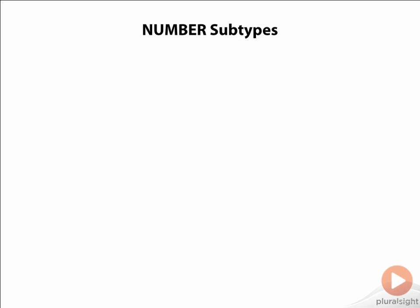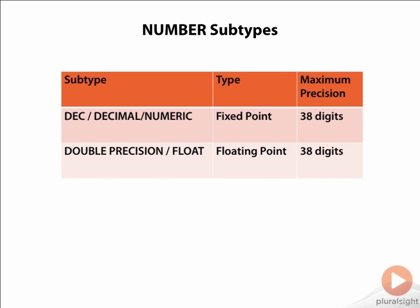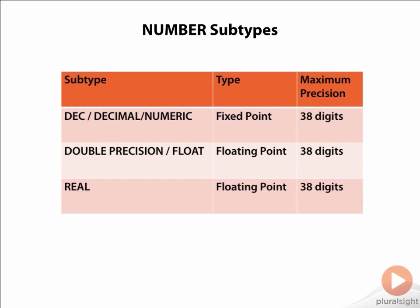Let us quickly look at the number subtypes. First, we have the decimal or numeric type, which are fixed point numbers with a max precision of 38 digits. Then we have double precision or float type, which are floating point numbers with a maximum precision of 38 digits. Real is also a floating point number with a maximum precision of 38 digits, just that it is internally stored with 4 bytes compared to double precision and float which take 8 bytes. Int, integer, and smallint are all integer types with a max precision of 38 digits. All of these are under the covers number data type with different constraints on them.